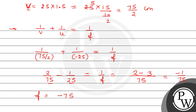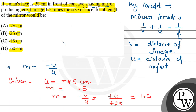F equals minus 75 cm. This negative sign shows that the focal length is in front of the mirror, not at the back side — consistent with a concave mirror. So F equals minus 75 cm. This is the focal length of the mirror, which matches option A. Option A is the correct answer. I hope you understood. Bye.